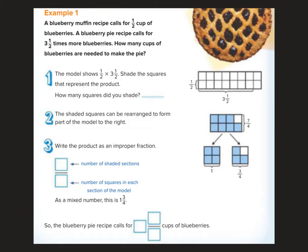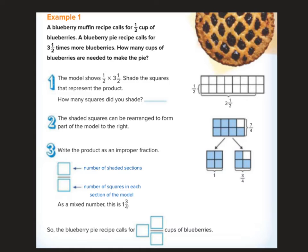A blueberry muffin recipe calls for one-half cup of blueberries. A blueberry pie recipe calls for three and a half times more blueberries. So we're multiplying three and one-half times one-half - half a cup, multiply it by three and a half. Remember, multiplying something by a half is the exact same thing as dividing it by two. So how many cups of blueberries are needed to make the pie?